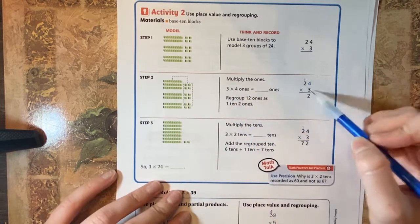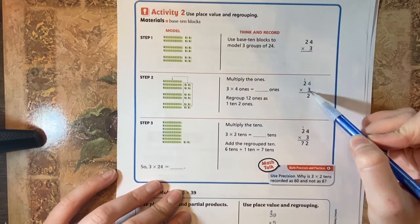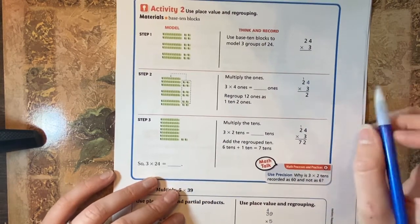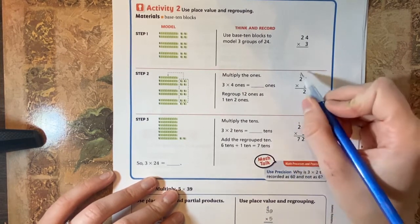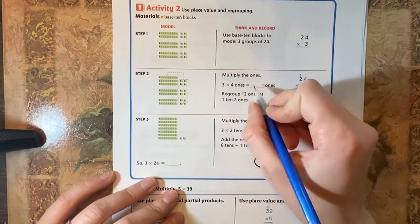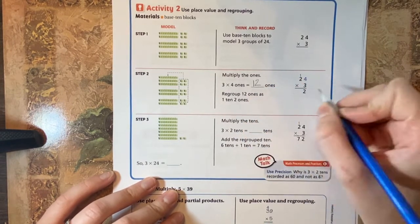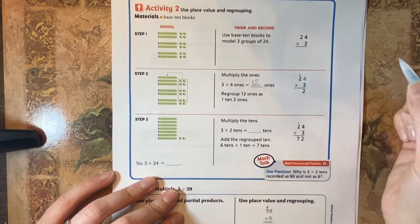So first we're going to start with the ones place. Four times three is 12. Now remember we can't have 12 in the ones place because we can only have ones in the ones place. So we write the two down here and we regroup and we bring that one up here. So we have a total of 12 ones, but the two is in the ones place and our one for the 12 is in the tens place. So we have to write it up here.